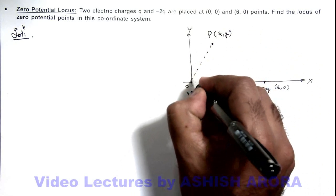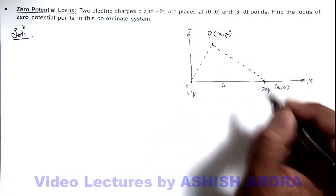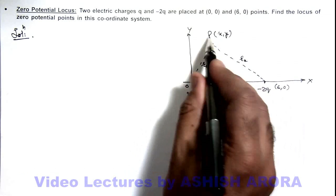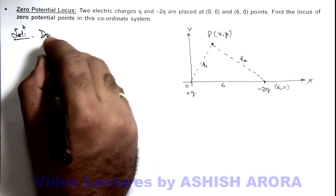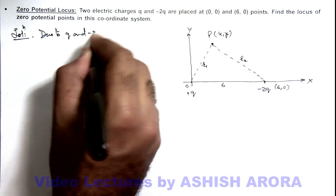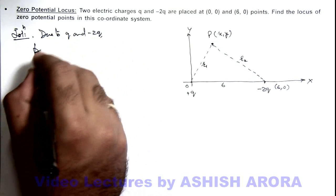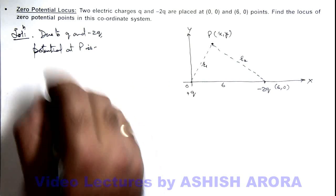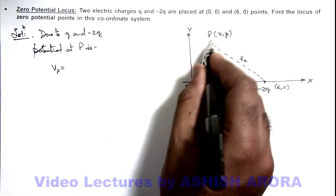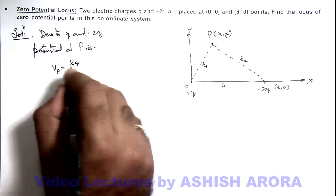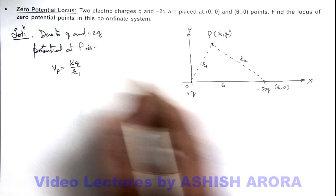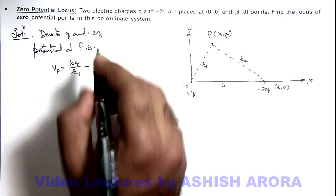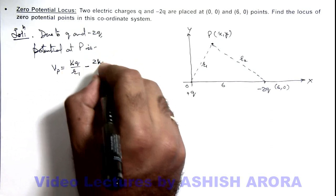From these 2 charges, if the distances of point P are r1 and r2, we can directly calculate the potential at point P. Due to q and minus 2q, the potential at P, denoted V_P, is kq divided by r1, where k is the electrostatic constant 1 over 4π epsilon, minus 2kq divided by r2.